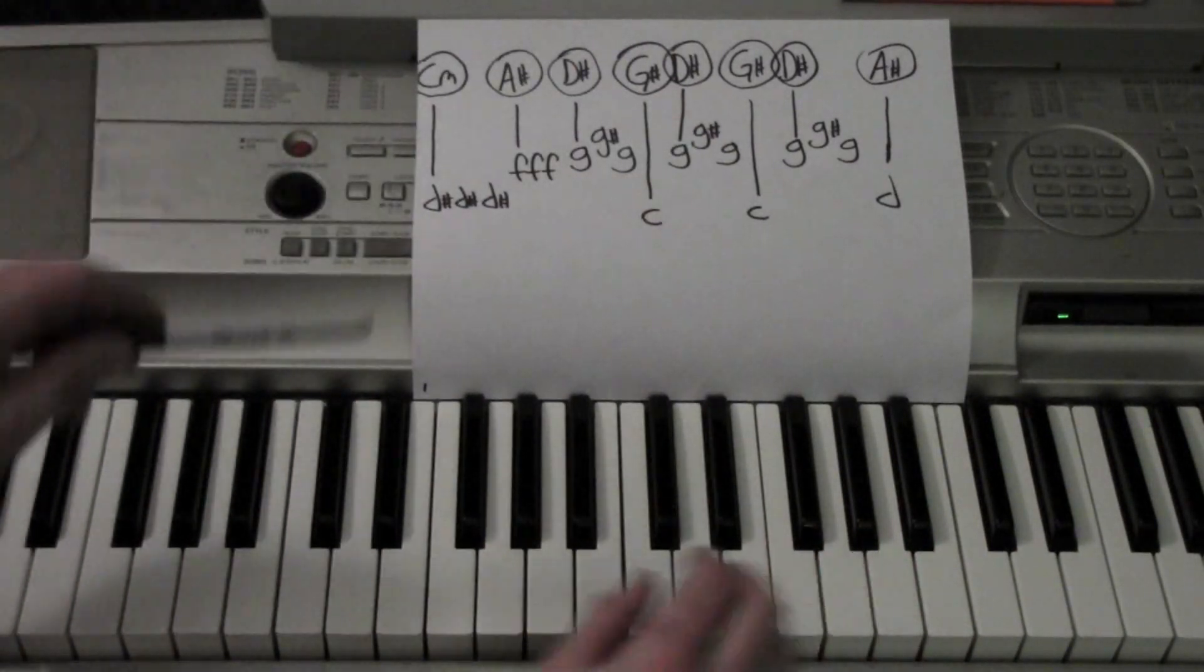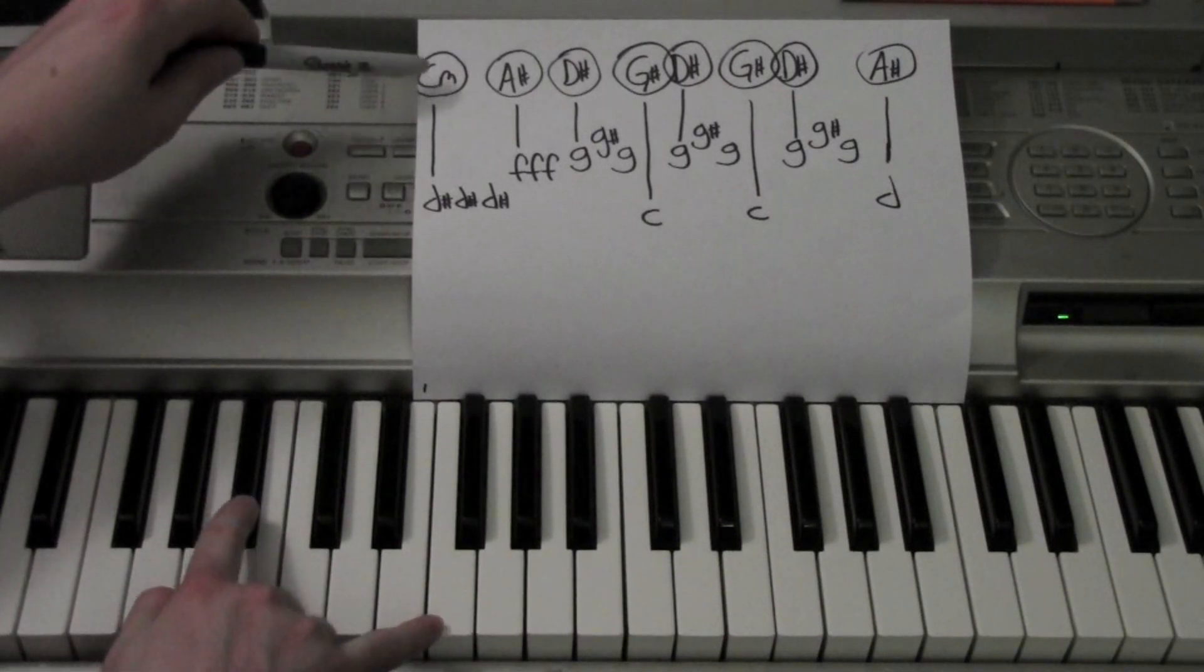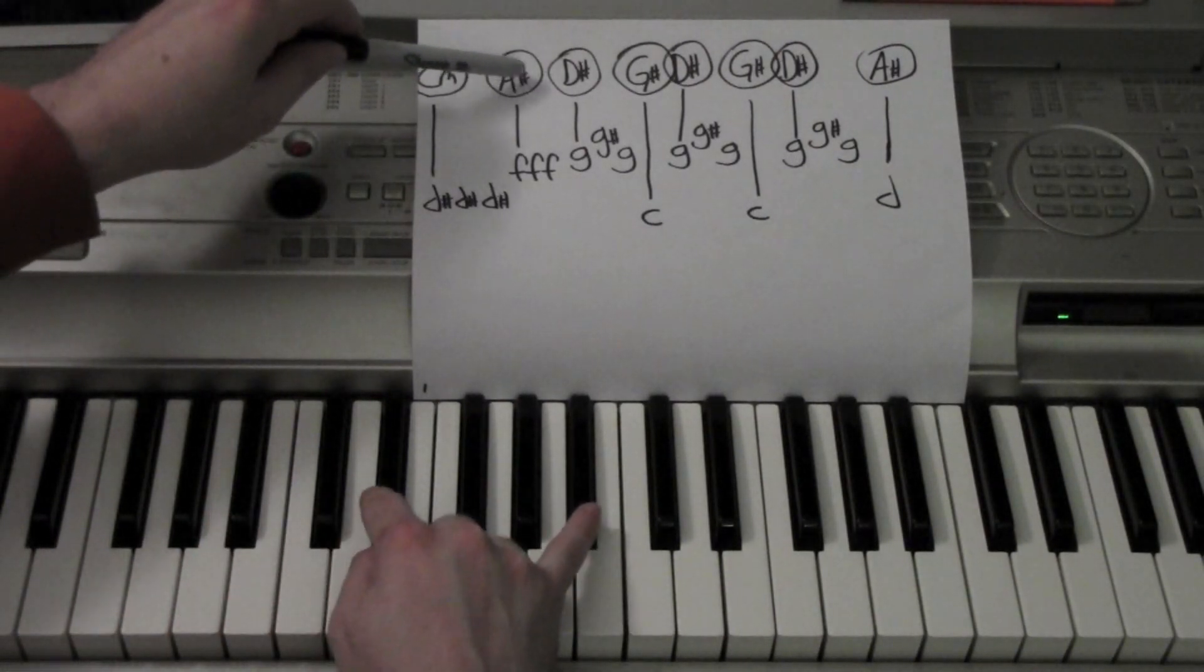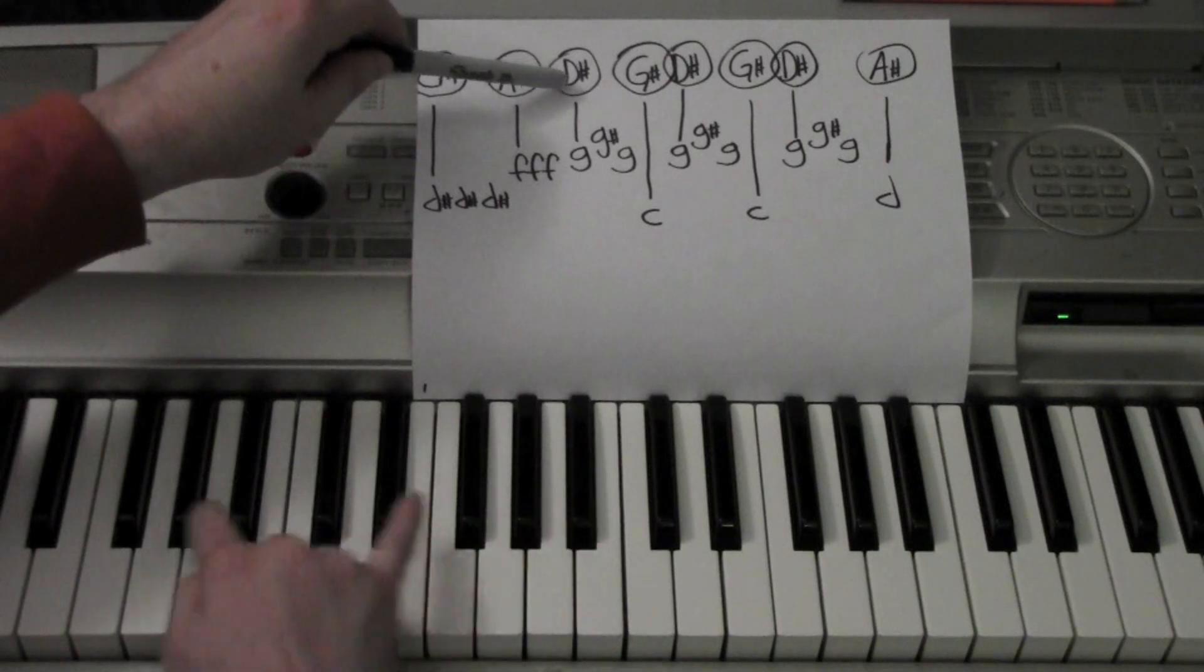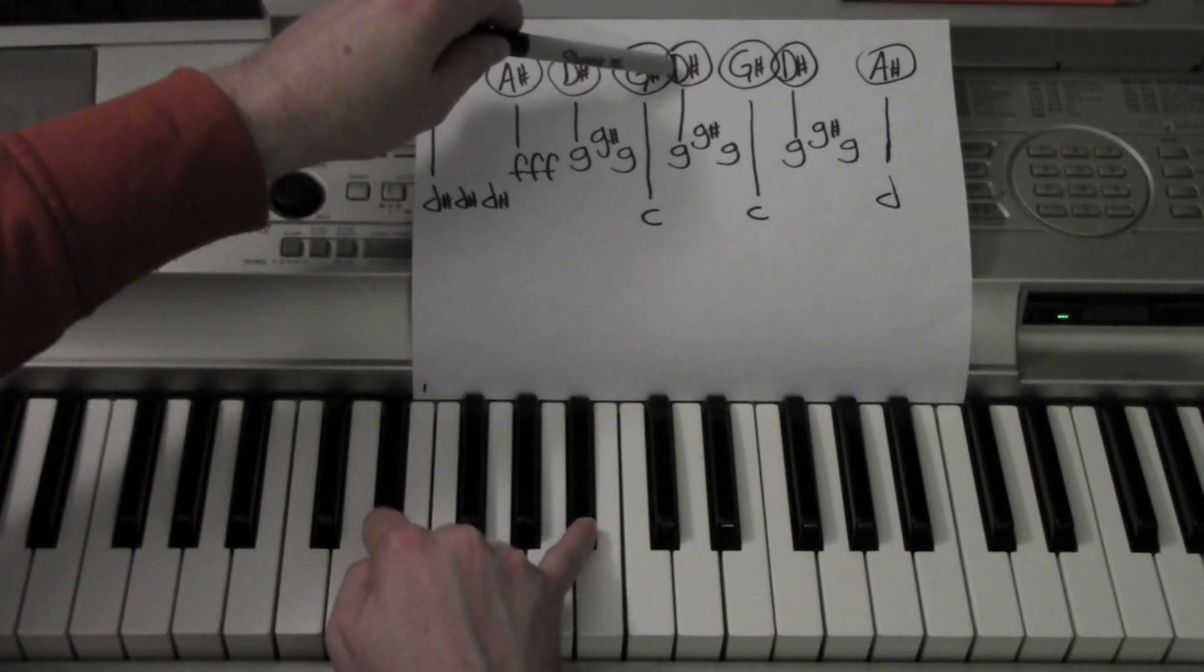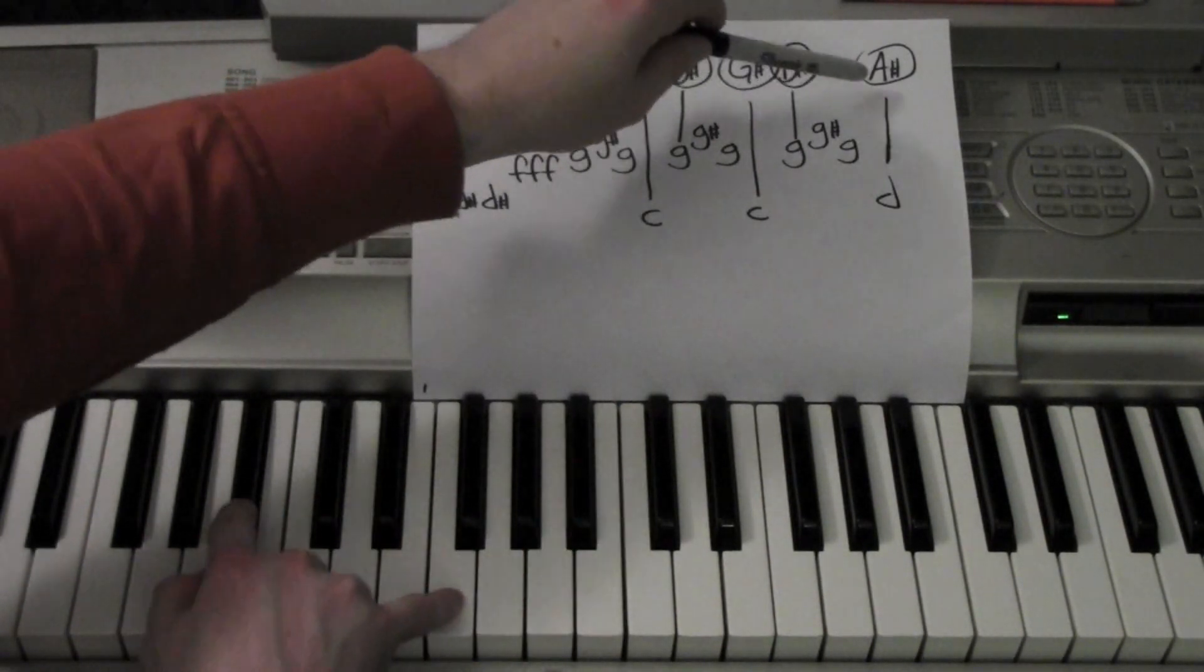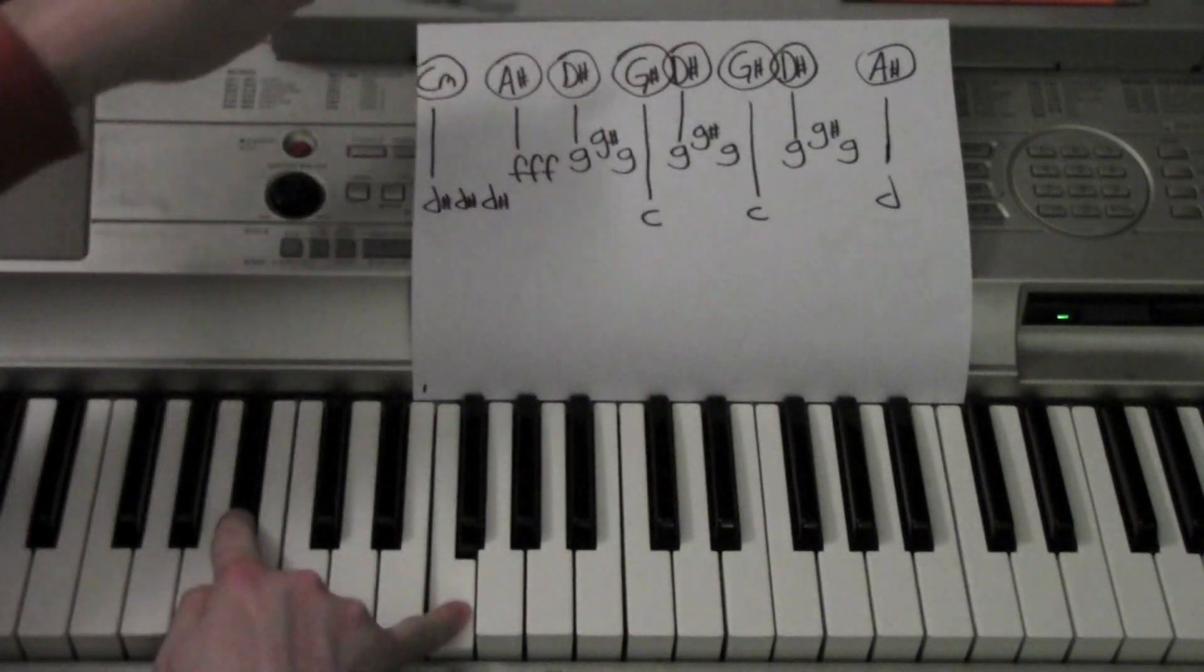Left hand, I'm doing one and five. So for my left hand, for C, I'm using those two. For A sharp, I'm using those two. For D sharp, those two. To G sharp, those two. D sharp, G sharp, D sharp, A sharp. Good.